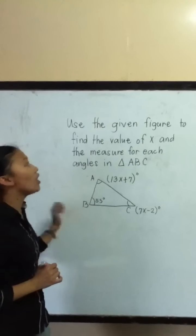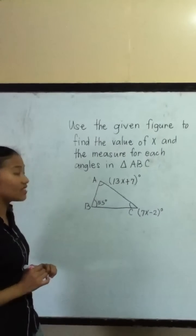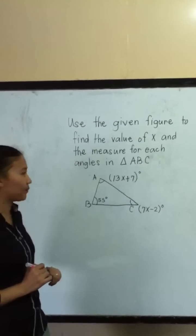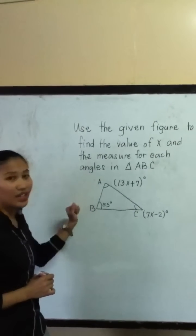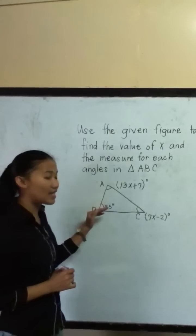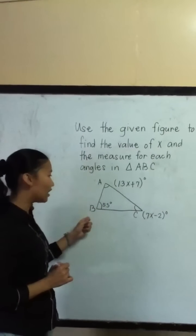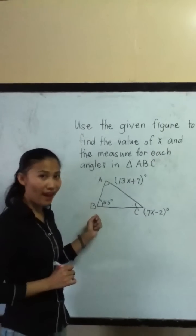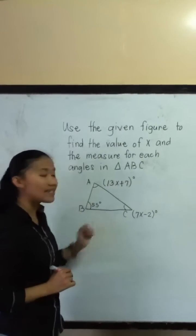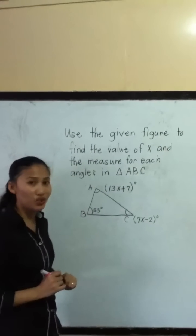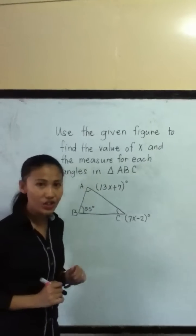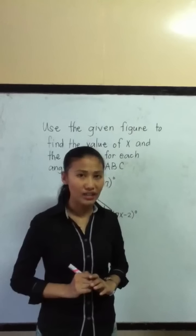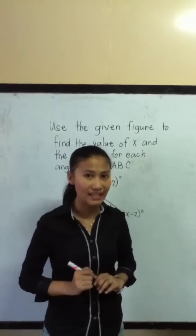Let us use the given figure to find the value of x as a measure for each angle in triangle ABC. For angle A, we have 13x plus 7 degrees. For angle B, we have 55 degrees. For angle C, we have 7x minus 2 degrees. The theorem states that we have to add the three angles to get 180 degrees.